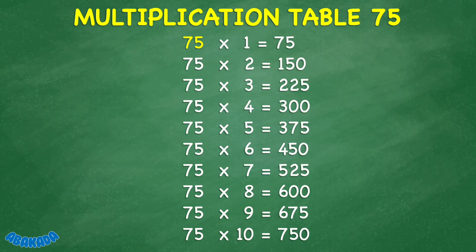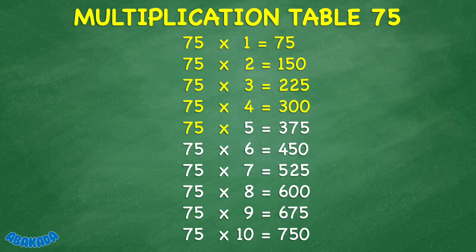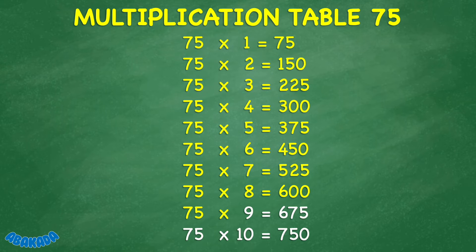75 times 1 equals 75. 75 times 2 equals 150. 75 times 5 equals 375. 75 times 6 equals 450. 75 times 7 equals 525. 75 times 8 equals 600. 75 times 9 equals 675. 75 times 10 equals 750.